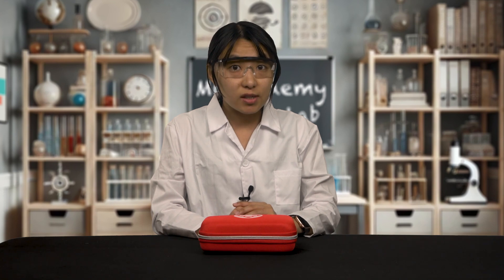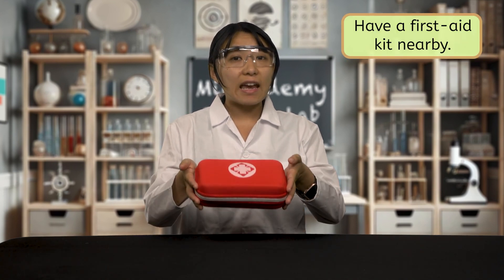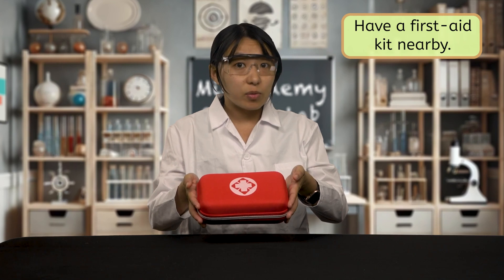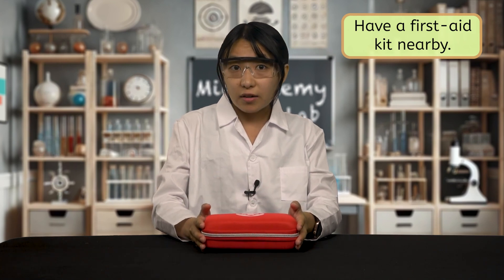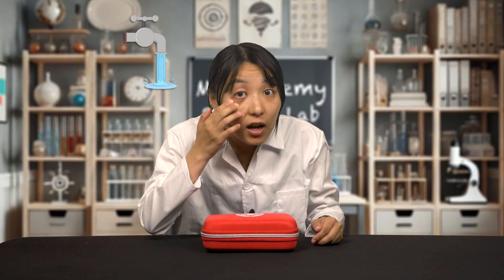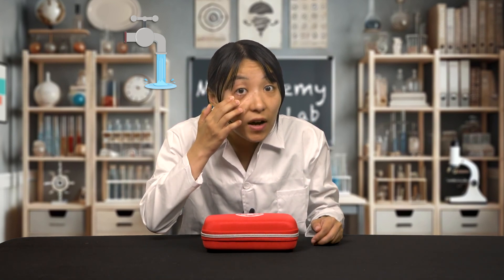And speaking of emergencies, always have a first aid kit nearby as well. This could include bandages for small cuts or burns and even water in case something splashes onto you. If something happens to get in your eye, don't rub it in. Turn on a sink and gently rinse your eye underneath the water for five minutes.